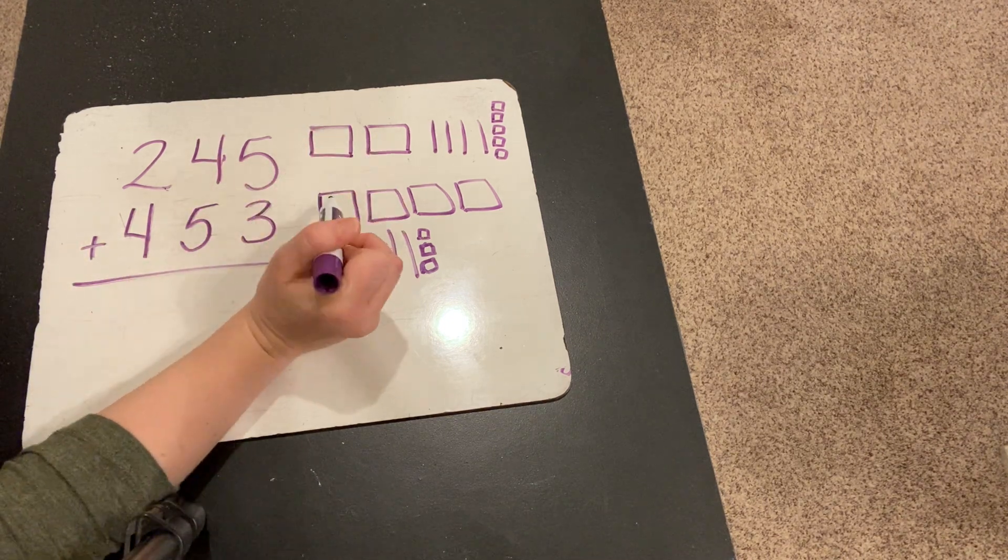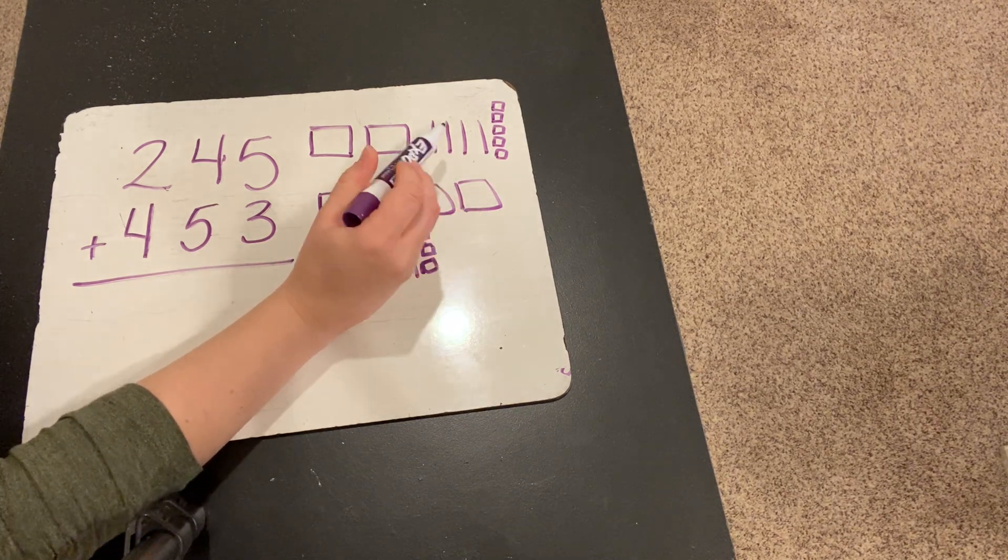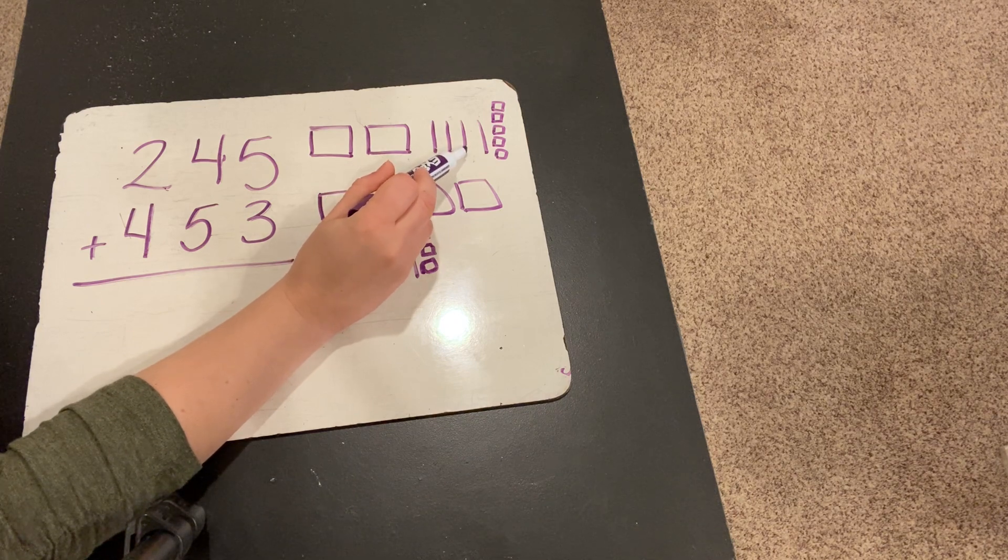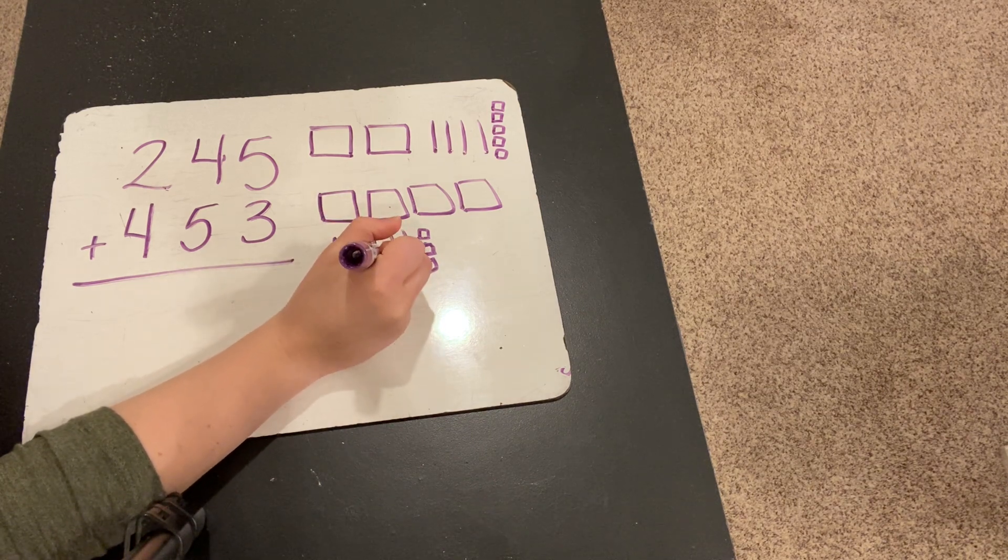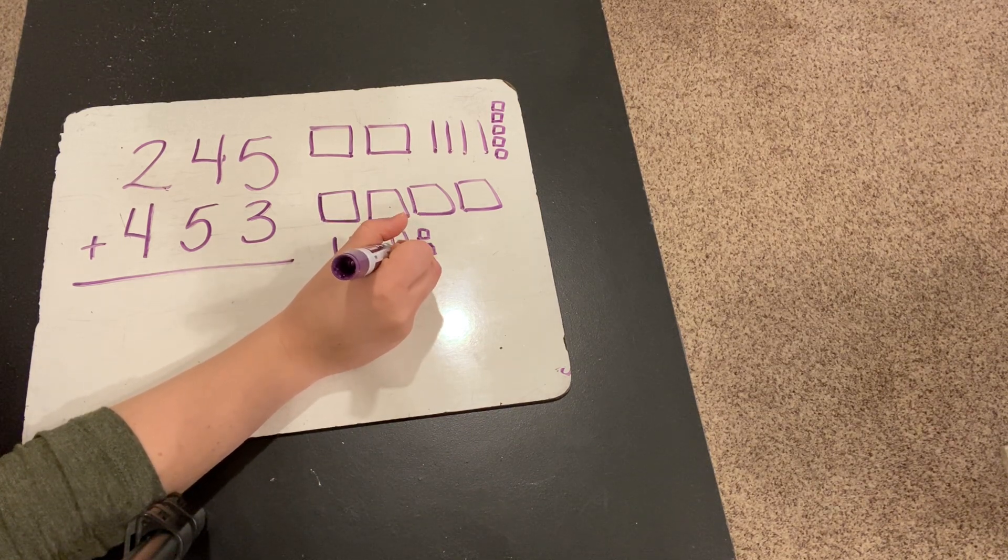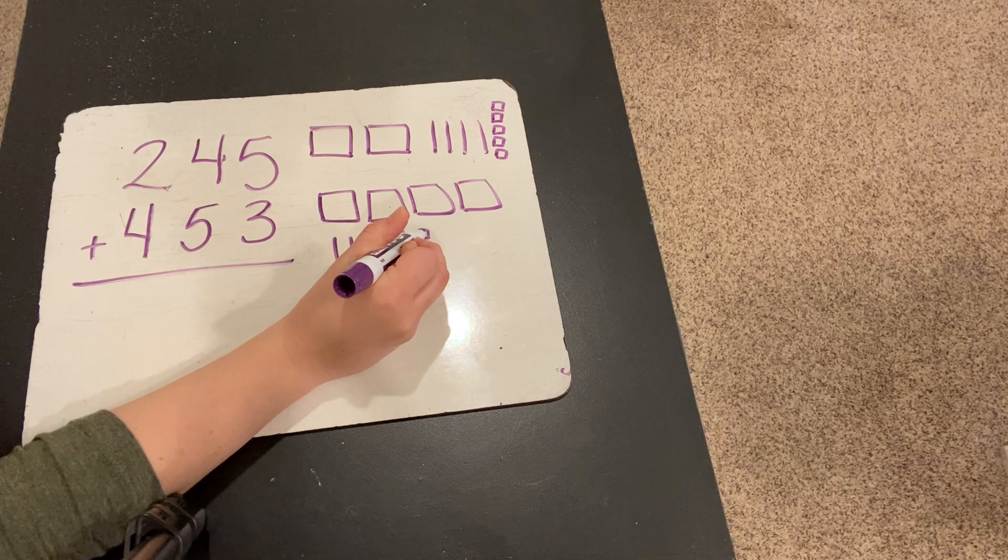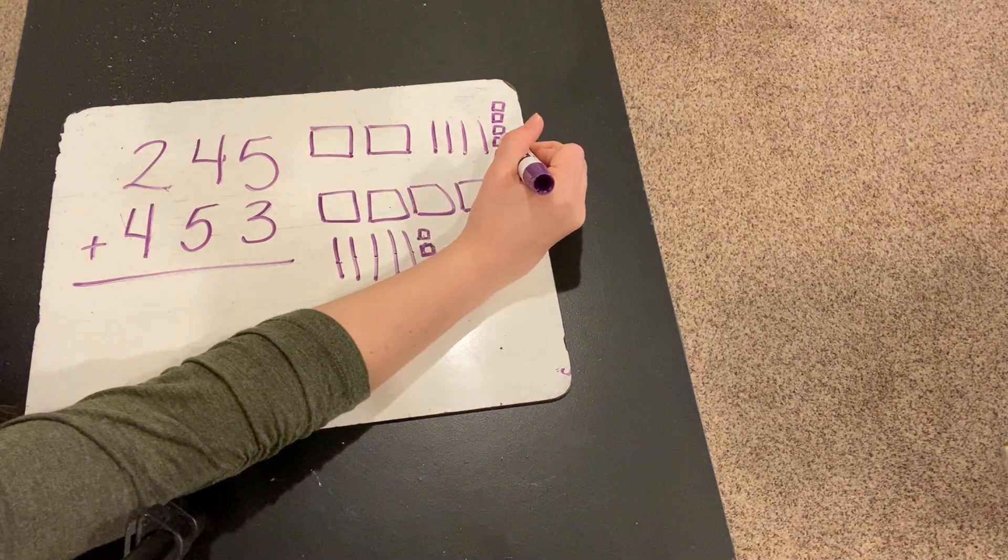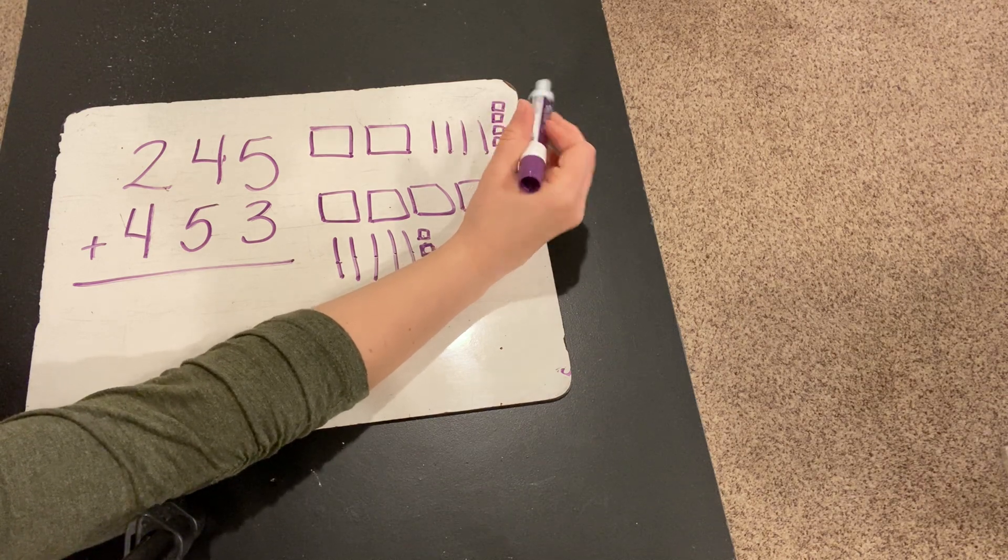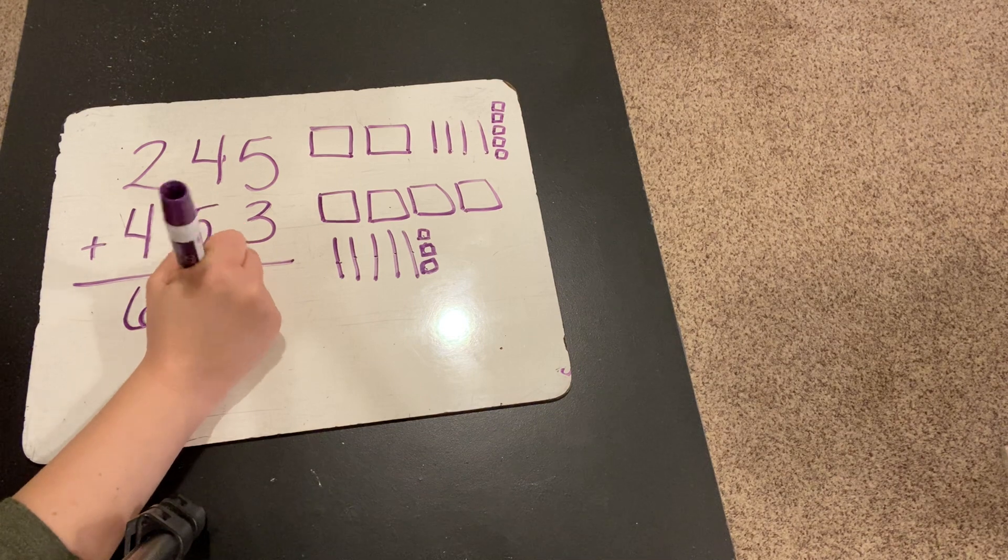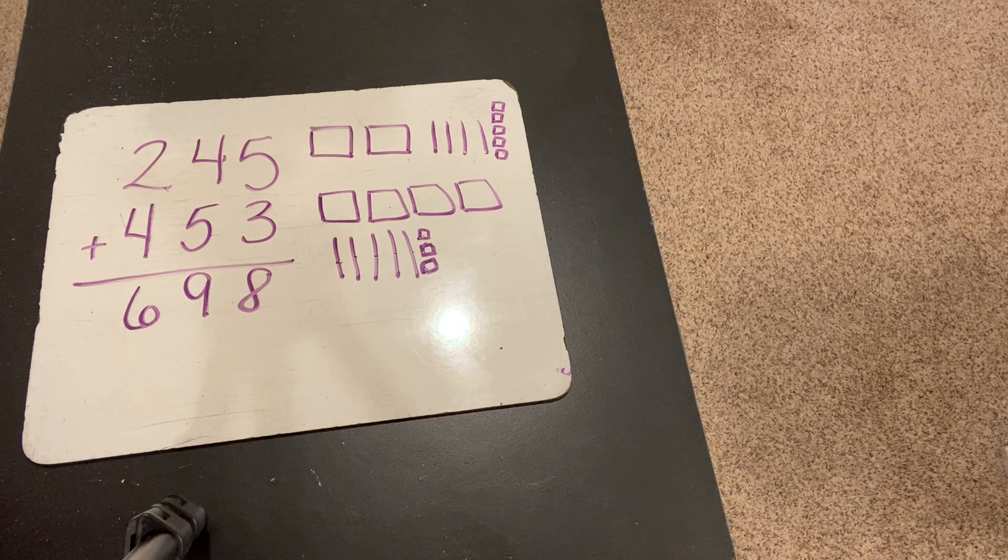100, 200, 300, 400, 500, 600, 610, 620, 630, 640, 650, 660, 670, 680, 690, 691, 692, 693, 694, 695, 696, 697, 698. Okay, so 245 plus 453 is 698.